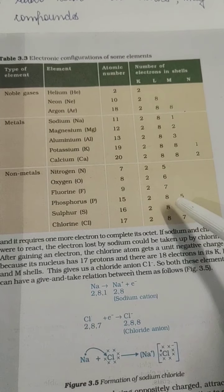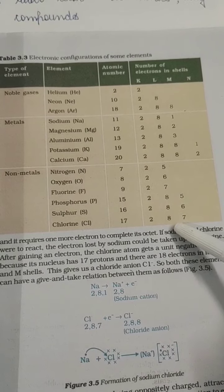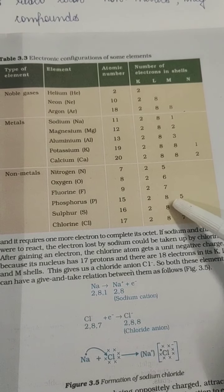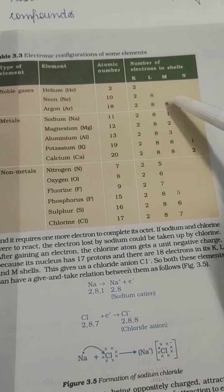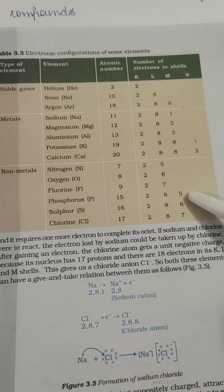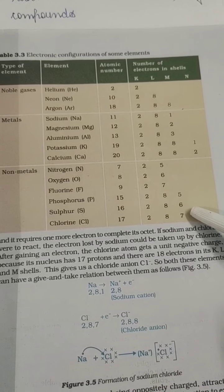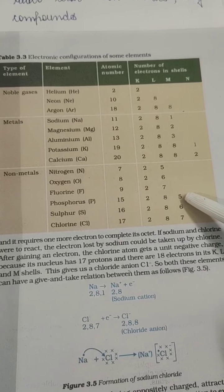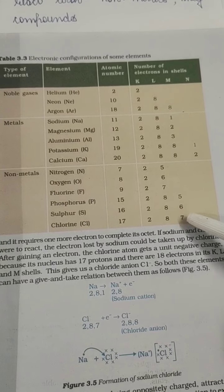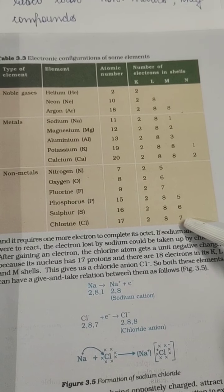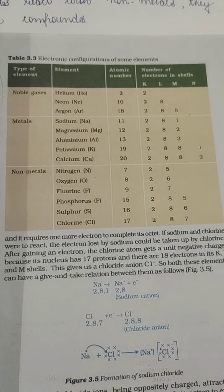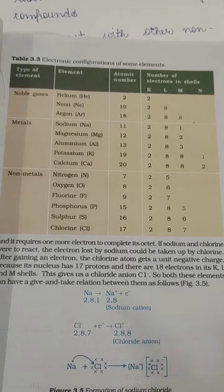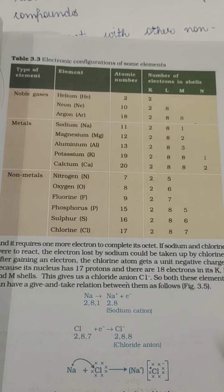In the case of phosphorus, sulfur and chlorine, they will attain the noble structure of argon because they want to have 8 electrons in the outer shell. So they will accept 3, 2 and 1 electron respectively. This is the reason they donate and accept electrons.